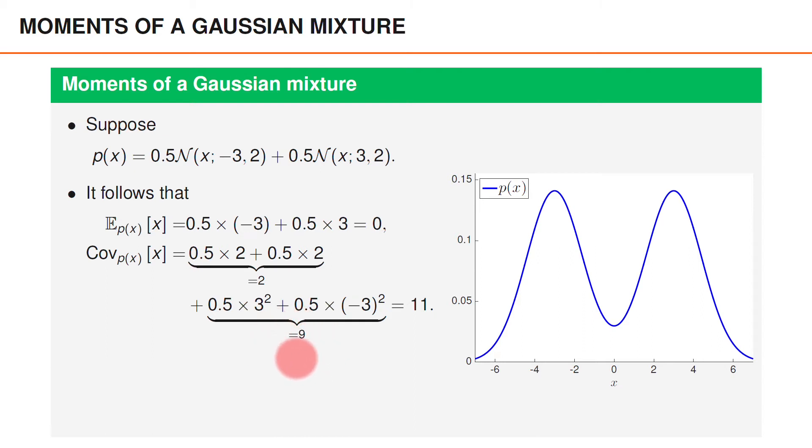And this reflects the fact that the two components are fairly well separated. The variance of x is 9 plus 2, which is 11. And as you can see, the majority of this variance is due to the spread in the mean of the two components in the mixture.